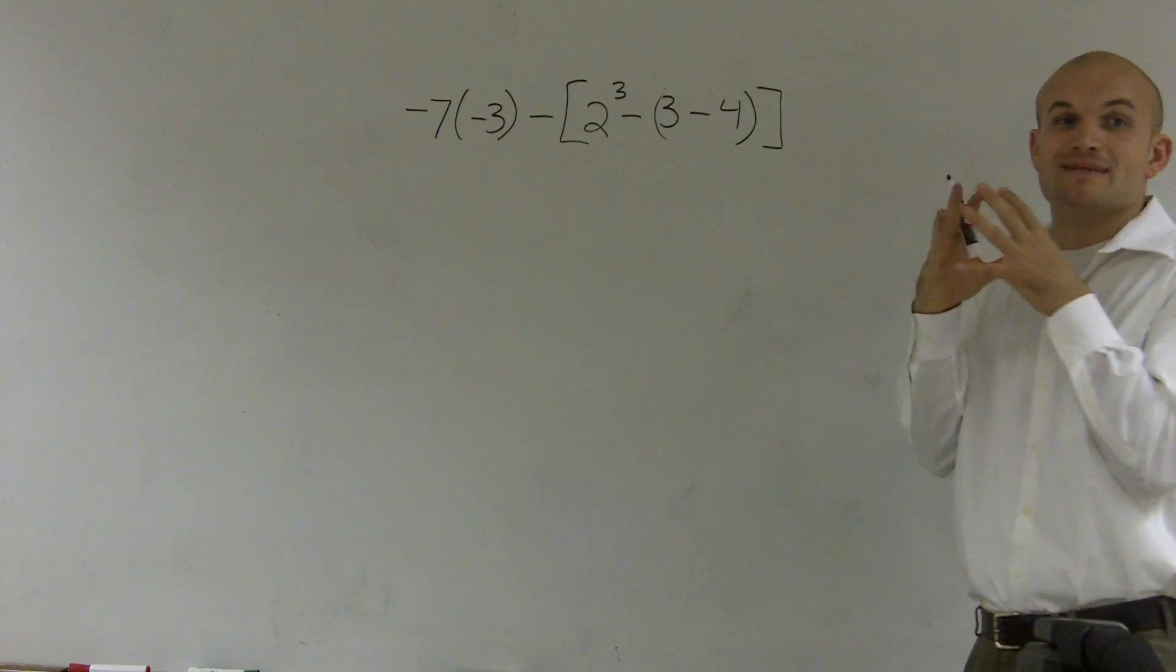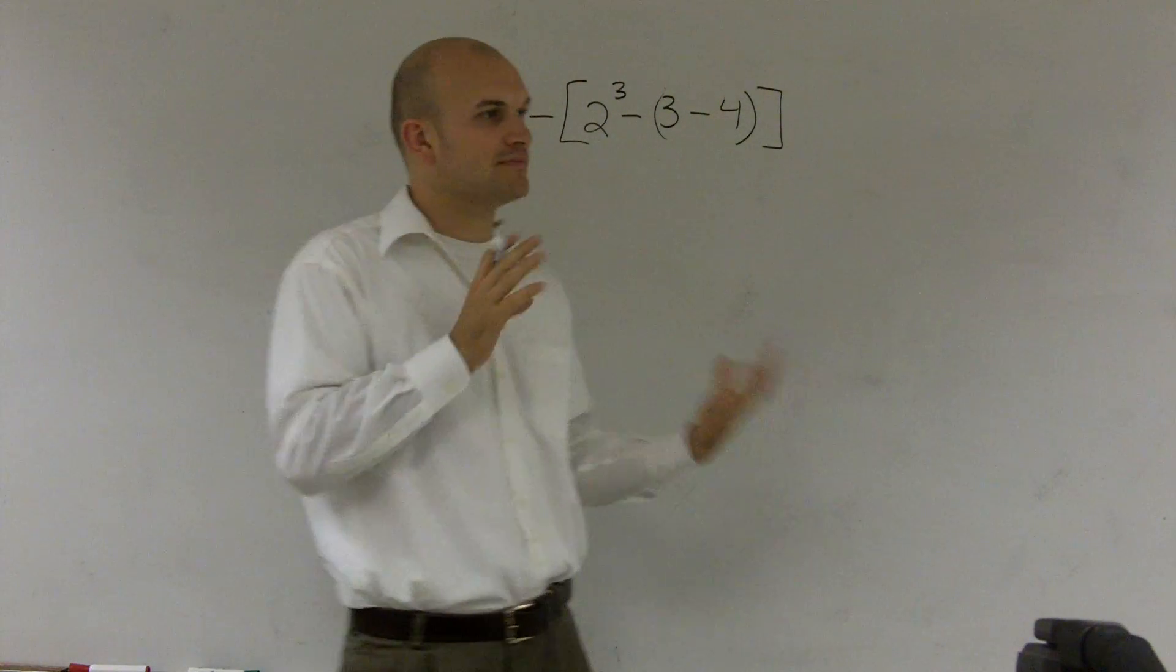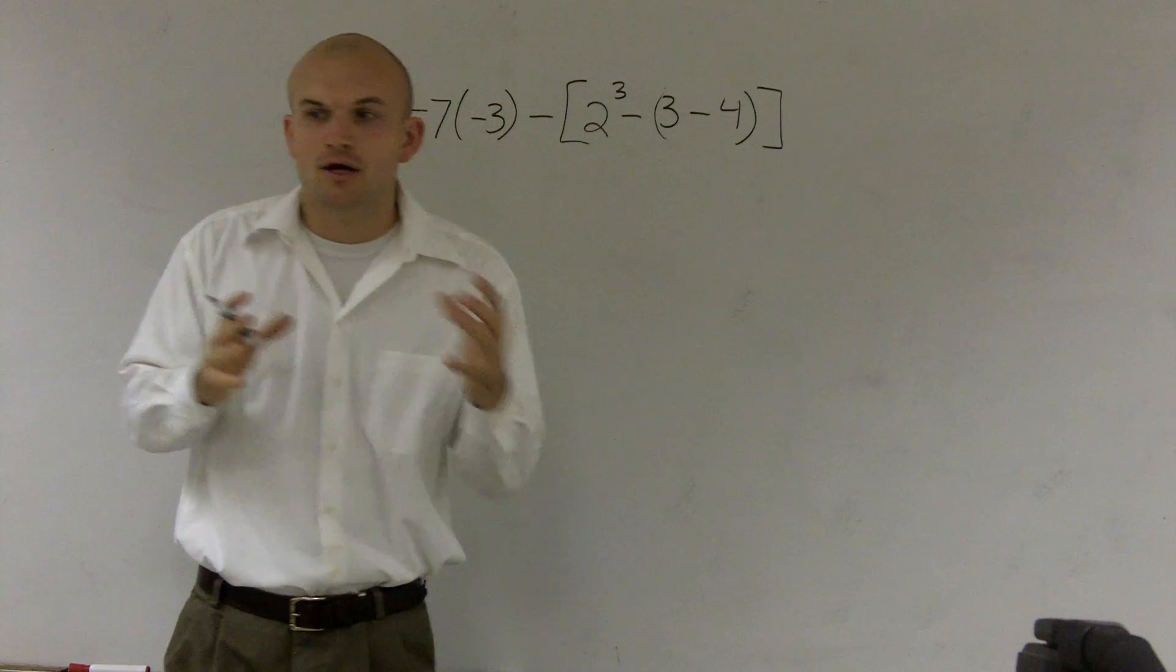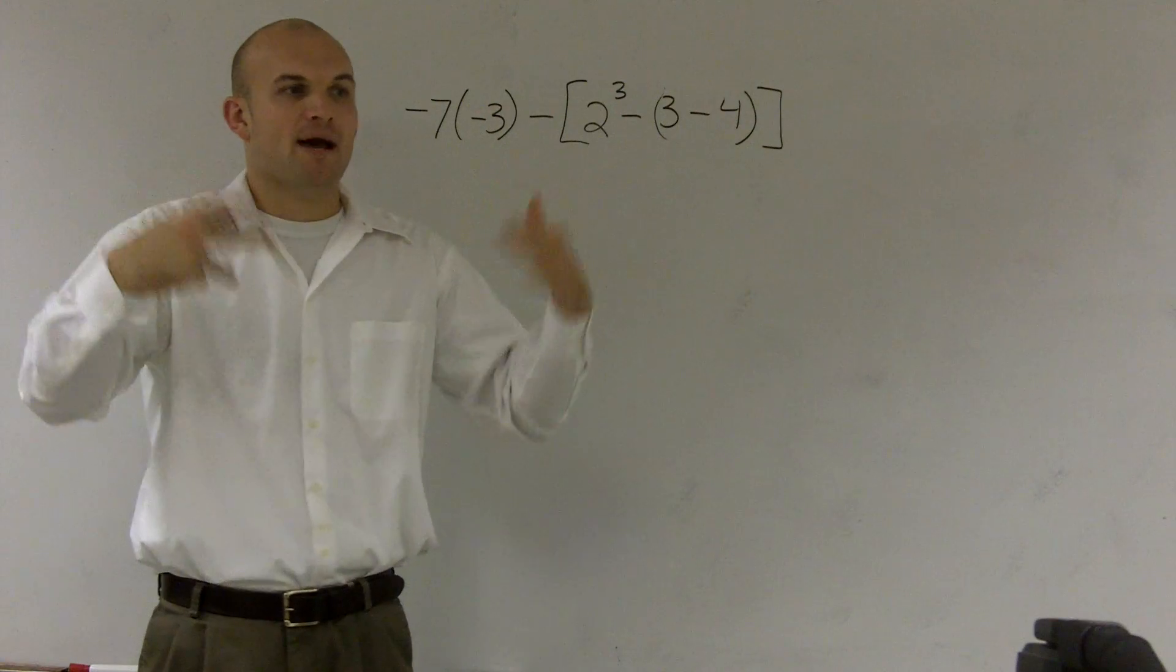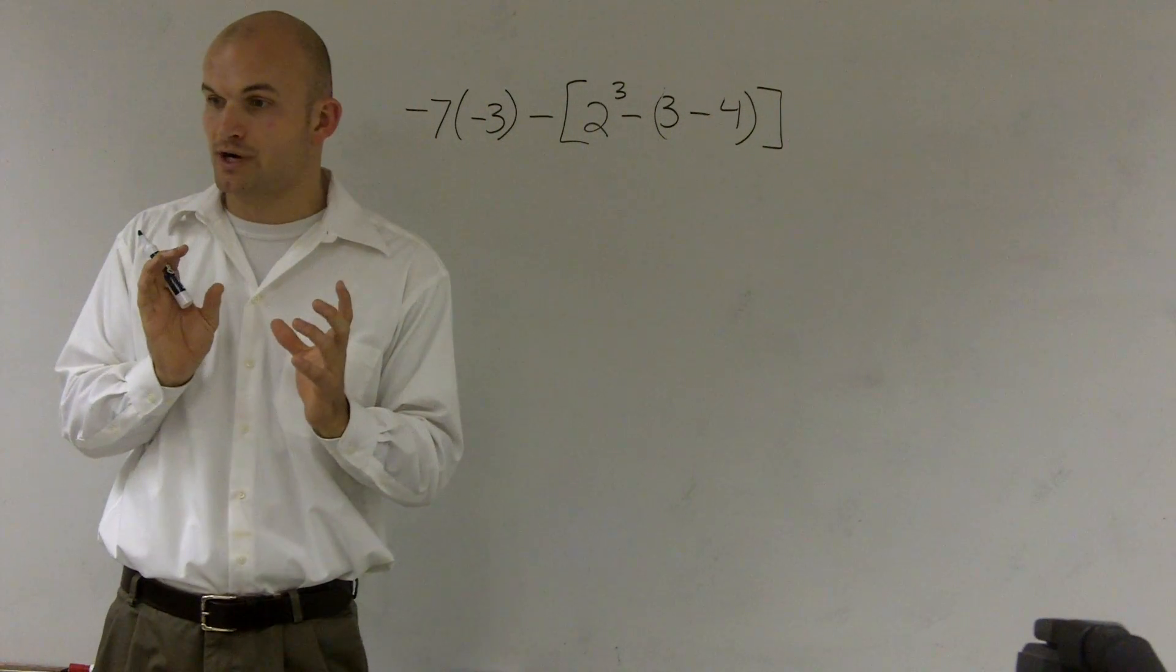So the first thing it tells me to do is always what's inside the parentheses. And you look up here, we have brackets, which is the same operation as our parentheses. But then, once we do inside our parentheses, we start PEMDAS all over again. And we say, OK, are there any smaller parentheses we can work inside?